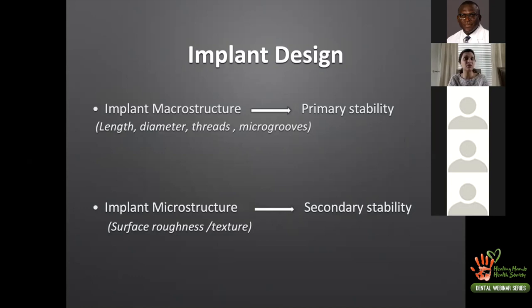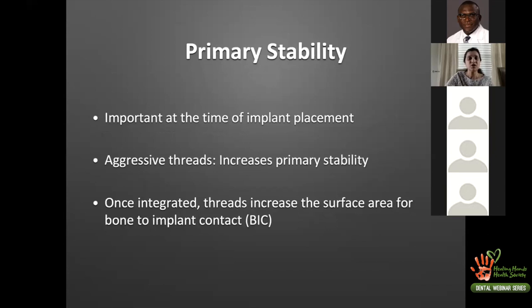Primary stability is important at the time of implant placement. The more aggressive the thread, the higher the primary stability. Once integrated, threads mainly increase the surface area of bone-to-implant contact. This primary-to-secondary stability relationship is illustrated in a graph originally from Straumann, used when promoting their SLA active implants for faster loading.